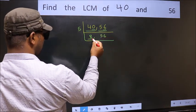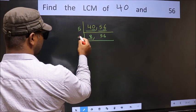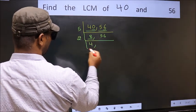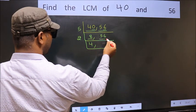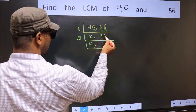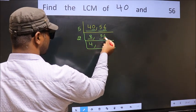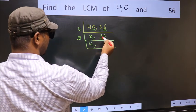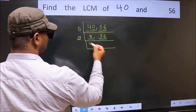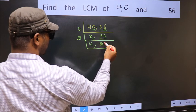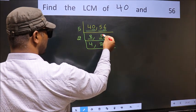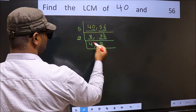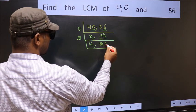Now here we have 8. 8 is 2 fours — 8. The other number is 56. The last digit is 6, which is even, so this is divisible by 2. The first number is 5. A number close to 5 in the 2 table is 2 twos are 4. 5 minus 4 is 1, carried forward — 16. When do we get 16 in the 2 table? 2 eights are 16.